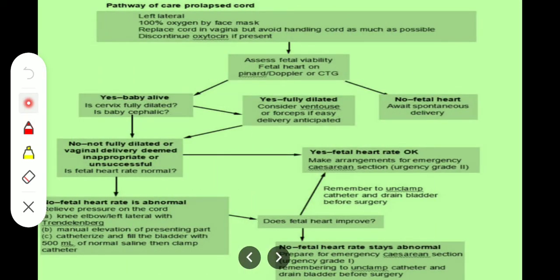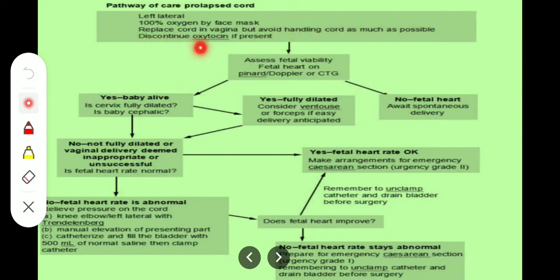You can see on the top that the pathway of care for cord prolapse is explained here. First of all, when we assess the patient and find that she has cord prolapse, we will put the patient in the left lateral position and give 100% oxygen by mask. Then we will try to replace the cord in the vagina but avoid handling the cord as much as possible and discontinue oxytocin if it is running.